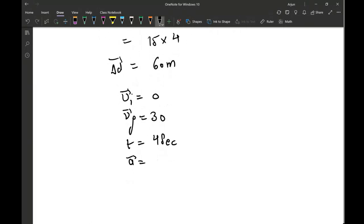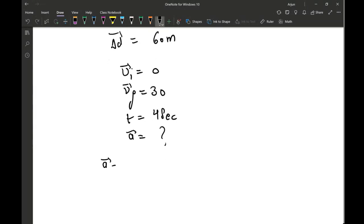So acceleration value will be equal to v_final minus v_initial divided by time. So that will be equal to 30 minus 0 divided by 4. Acceleration comes out to be 7.5. Let me do the calculation. So 30 divided by 4, yeah, 7.5 meters per second squared.